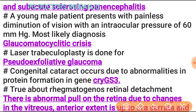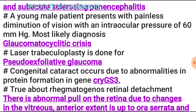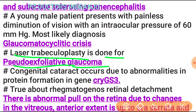Painless diminution of vision occurs mostly in diseases of the retina, lens, and cornea. Laser trabeculoplasty is done for pseudoexfoliative glaucoma. Congenital cataract occurs due to abnormality in protein formation in gene CRYGS3.